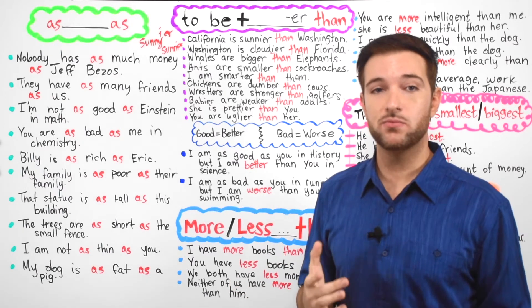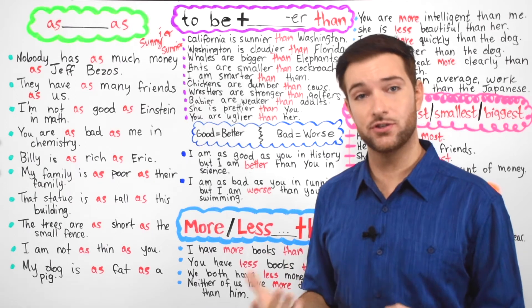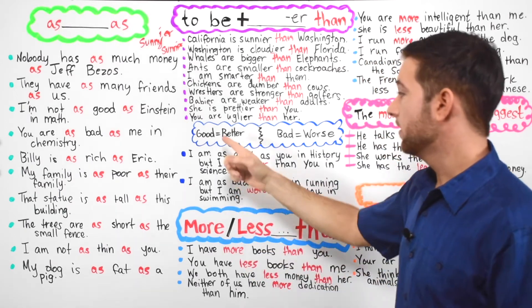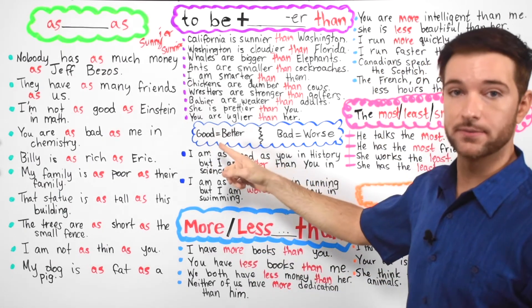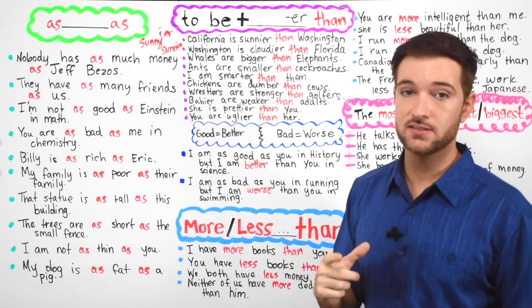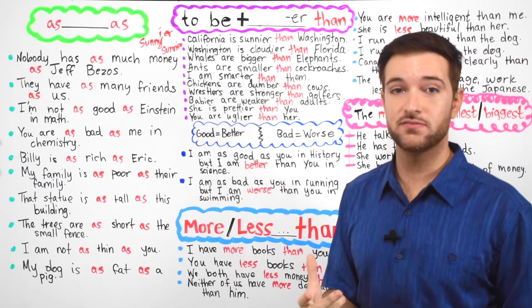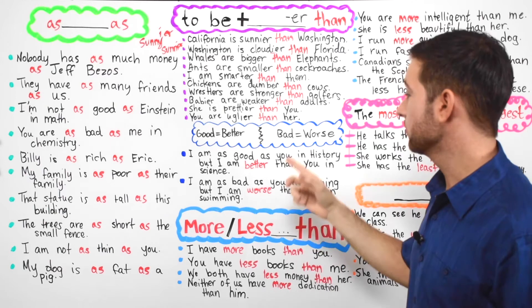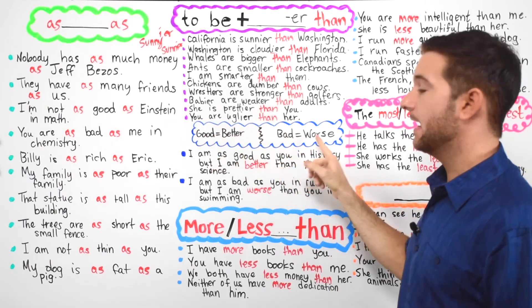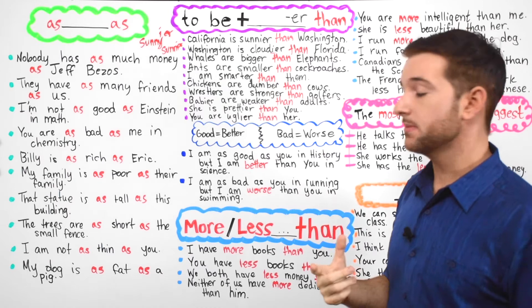Now remember that when we use the word good, we cannot say the word gooder. We have to say the word better. So good becomes better. Similarly, we cannot say the word badder when using an adjective like bad. Rather, we use the word worse. So good, better, bad, worse.